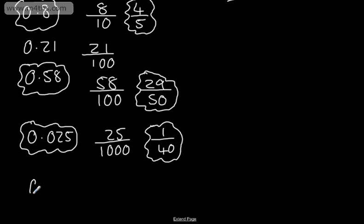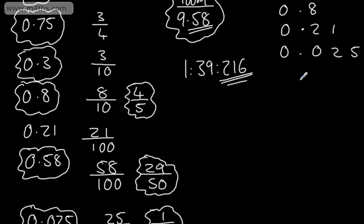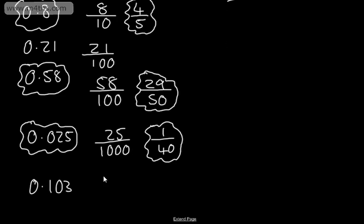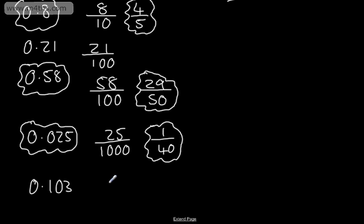If we have a look at 0.103, again, we've got 103 thousandths. So let's write this in, 0.103. So we're into the thousands column here. So we can simply write this now as 103 over 1,000. And this now is in its simplest form. So we can't do anything with this, and we would just now leave it like so.